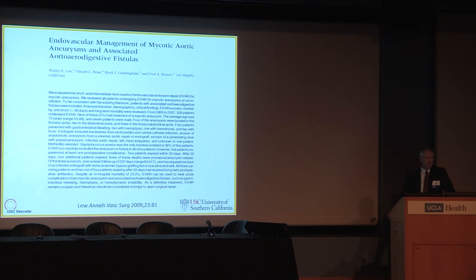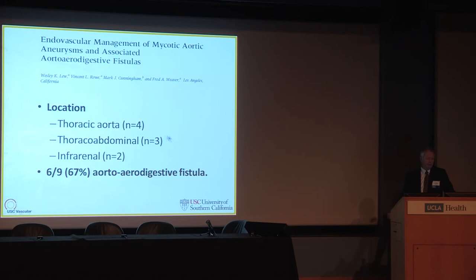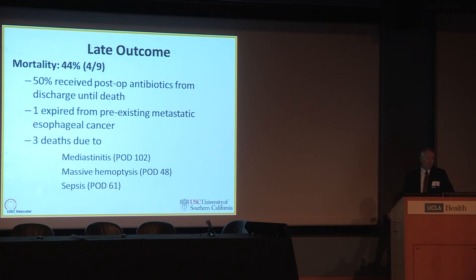Dr. Liu, a former fellow and research fellow here, put together our early experience with endovascular management of aortic infections. In patients where we could isolate the bacteria, MRSA was present in every single case, and antibiotic treatment was instituted at diagnosis and continued on a prolonged basis for most patients. Four cases were in the thoracic aorta, three in the thoracoabdominal aorta, and two in the infrarenal aorta. Six of the nine were associated with an aerodigestive fistula, which is a bad actor. Mortality was about 50% over the long term.